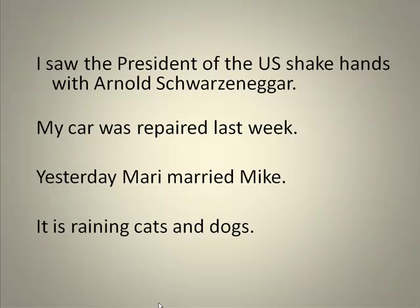We also often tell students that the subject is really the most important part of the sentence, and then we come across a sentence like 'it's raining cats and dogs.' 'It' is the subject — it's definitely not the most important part of the sentence, and in fact it doesn't have any meaning at all.